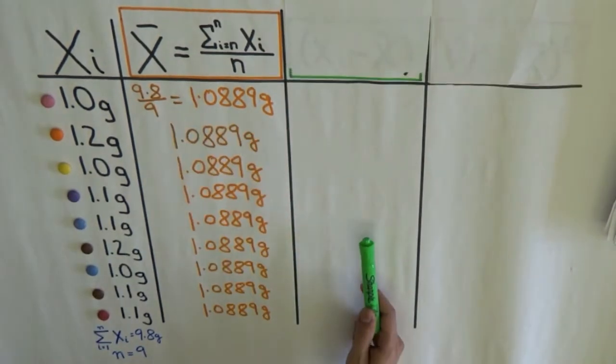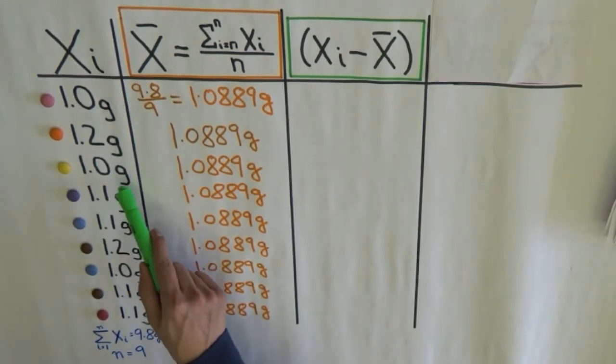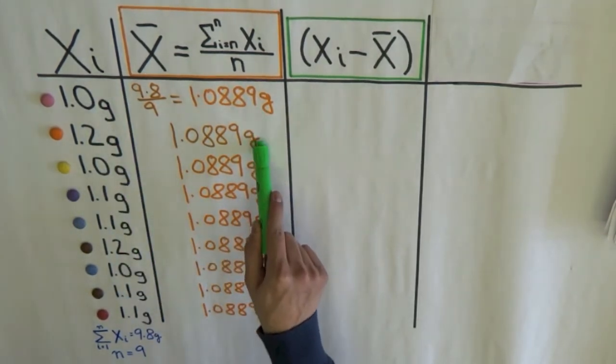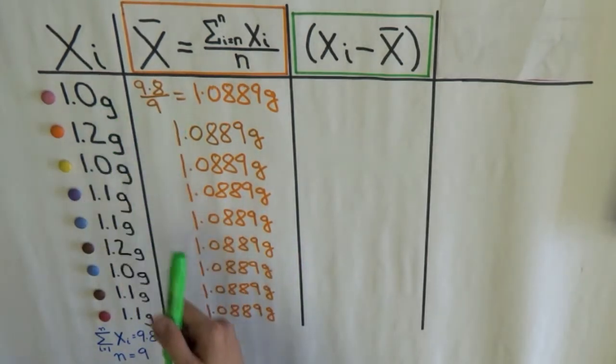The next step is to find the difference between each individual smarty weight and the average smarty weight. We do this by subtracting x bar from xi.